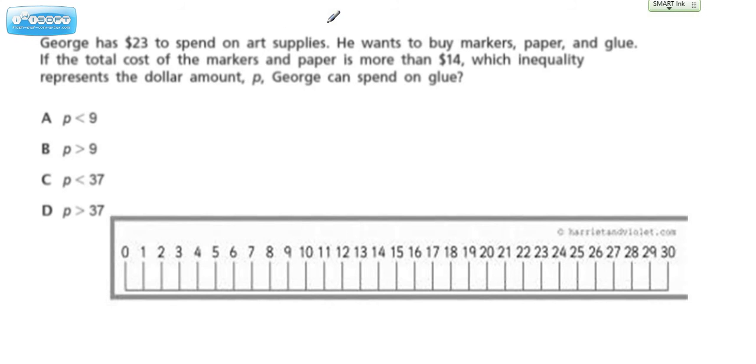George has $23 to spend on art supplies. He wants to buy markers, paper, and glue. If the total cost of the markers and paper is more than $14, which inequality represents the dollar amount, P, George can spend on glue?